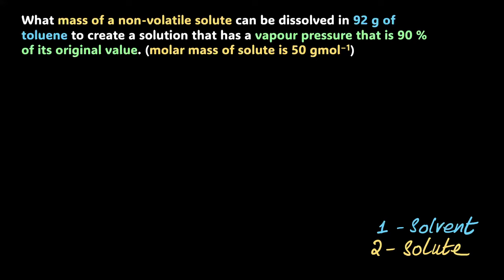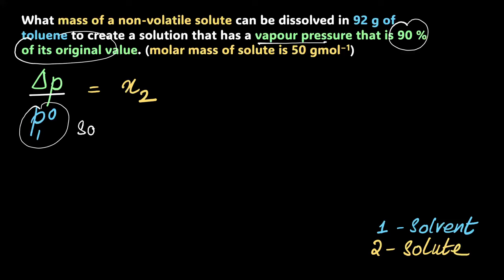Unpause. The expression you need to start this off is delta P by P1 naught is X2. That's how relative lowering of vapor pressure works. And vapor pressure is 90% of its original value. What does this really mean? If I took the initial vapor pressure to be just P1 naught, just pure solvent, the new vapor pressure P will be 0.9 of that. That's all this means.